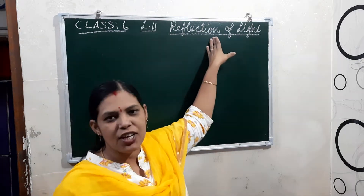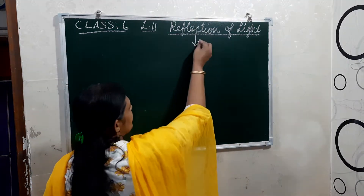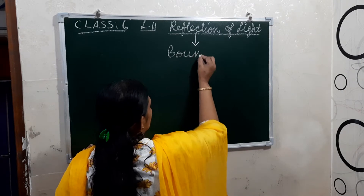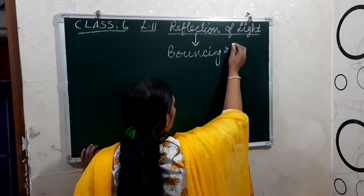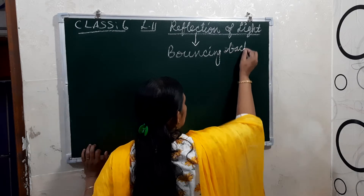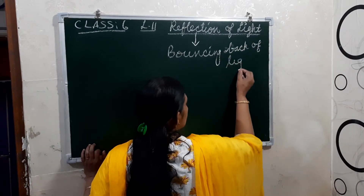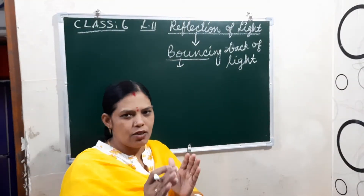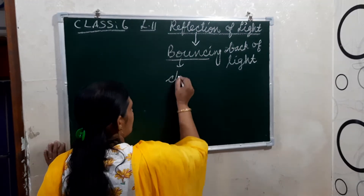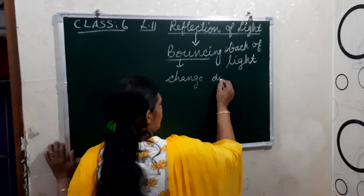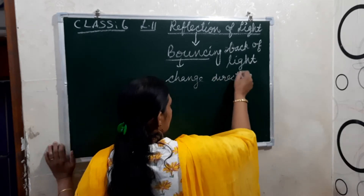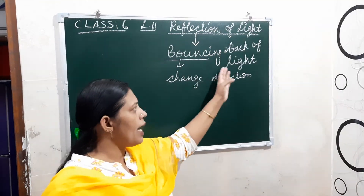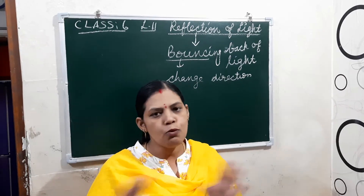What is meant by reflection? Reflection is nothing but the bouncing back of light. Bouncing means changing the direction or the path of light. Reflection of light means the bouncing back of the light when it falls on a smooth surface.